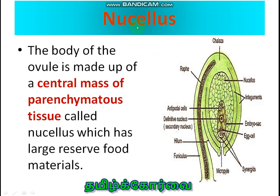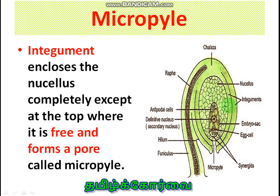Next one is the nucellus. The bulk of the ovule is made up of nucellus. It is the central mass of parenchymatous tissue called nucellus, which has large reserve food materials for the development of the embryo sac as well as the embryo.